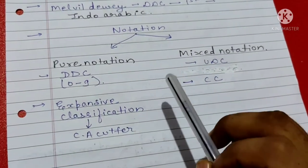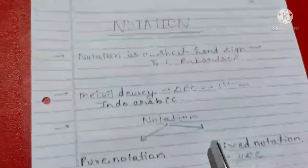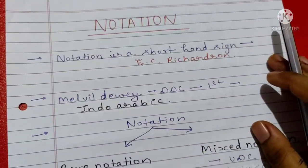So remember, pure notation: DDC and Expansive classification. Mixed notation is UDC and CC.